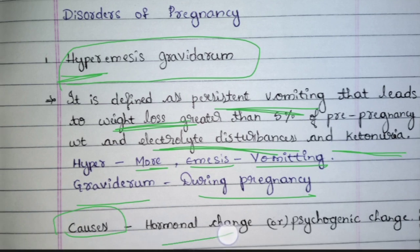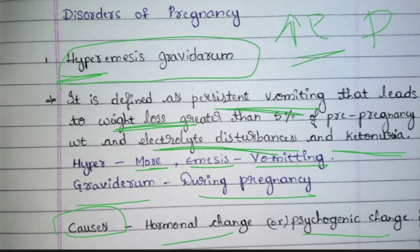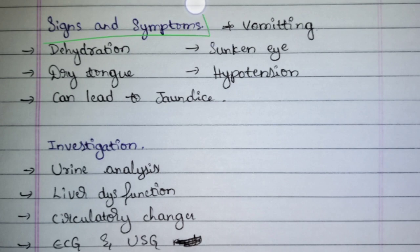The cause for hyperemesis gravidarum is hormonal change and psychogenic change. Hormonal change is because during pregnancy estrogen and progesterone levels increase vigorously, causing vomiting sensation. Psychogenic causes are due to anxiety in the patient. Apart from this there are minor reasons such as allergic reactions and certain food items causing vomiting.